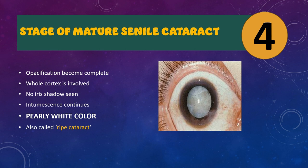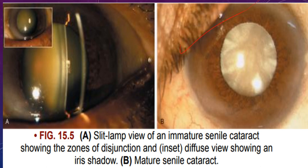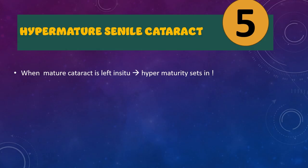The fourth stage is mature senile cataract, in which all lens fibers become opacified and the entire cataract is completely developed. The whole cortex is involved, no iris shadow is seen because no cortical fibers remain clear. If there were intumescent changes in the immature stage, these continue into the mature stage. The color is often described as pearly white, and many call this a ripe cataract.